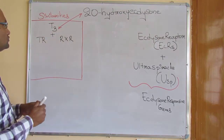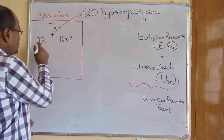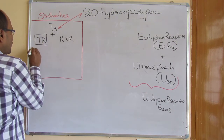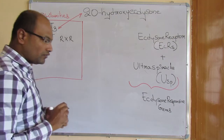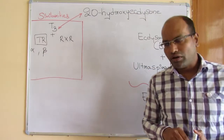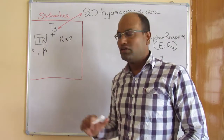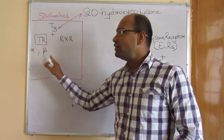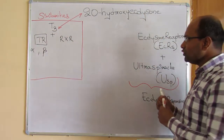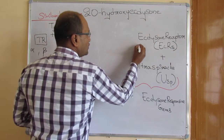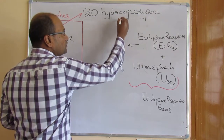In both cases, the hormones have nuclear receptors. In the case of 20-hydroxy ecdysone, there is an ecdysone receptor (EcR). In the case of thyroid hormone, as we have seen in amphibian metamorphosis, there are thyroid hormone receptors (TR) — alpha and beta. TR-alpha is expressed before the thyroid gland has developed, and TR-beta is expressed after the influence of thyroid hormone itself, meaning beta thyroid receptors are under the influence of thyroid hormone.